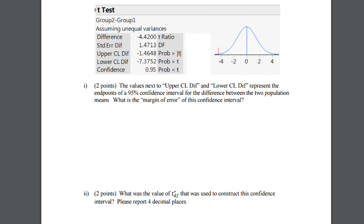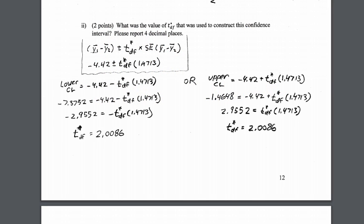With that in mind, take everything you have and plug it in. We can solve it two ways: the difference minus the t-statistic times the standard error equals the lower bound, or the difference plus the t-statistic times the standard error equals the upper bound.